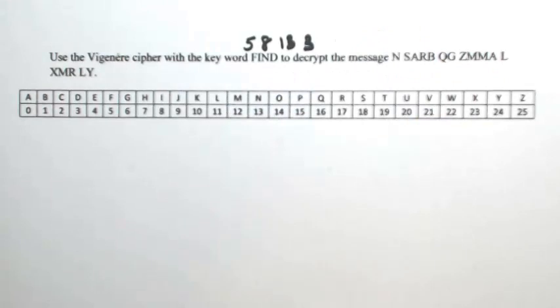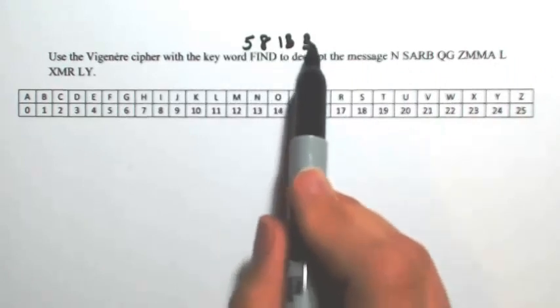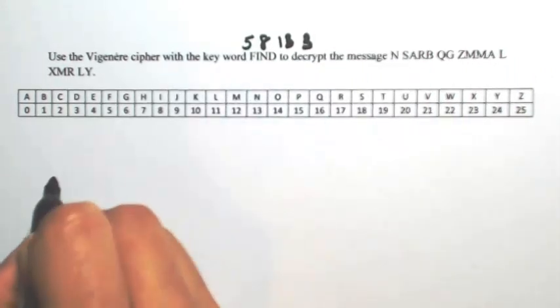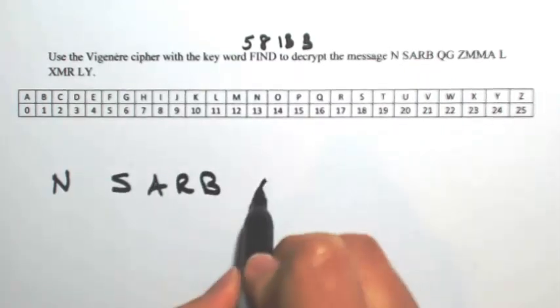So this is going to tell us what the shifting is. Now I'm going to rewrite my encrypted message and then write down what the shift is going to be for each letter. So just rewriting my message.